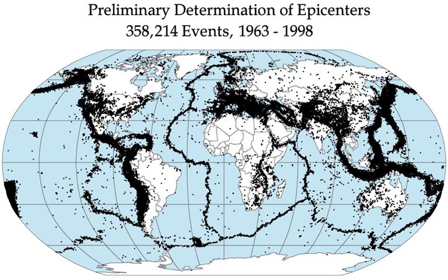Earthquakes often occur in volcanic regions and are caused there both by tectonic faults and the movement of magma in volcanoes. Such earthquakes can serve as an early warning of volcanic eruptions, as during the 1980 eruption of Mount St. Helens. Earthquake swarms can serve as markers for the location of the flowing magma throughout the volcanoes. These swarms can be recorded by seismometers and tiltmeters — a device that measures ground slope — and used as sensors to predict imminent or upcoming eruptions.